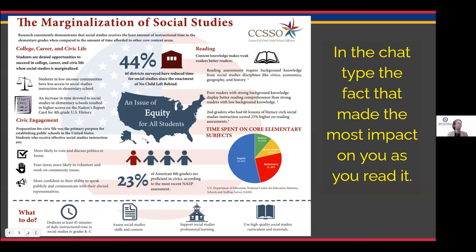I'm seeing great information in the chat. A lot of people are talking about how the two subjects that get the least amount of time in elementary school are science and social studies. People are talking about students not being proficient in civics currently. There's also a lot of conversation about reading and social studies — the idea that content knowledge is important and that social studies content knowledge makes poor readers better readers. And some individuals are looking at how teaching social studies creates students who are more civically engaged: they vote, discuss politics at home, are more likely to volunteer, and are more confident in their ability to speak. Time dedicated to social studies decreased after No Child Left Behind.